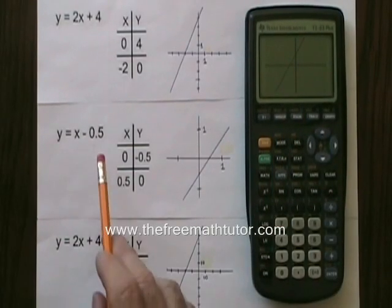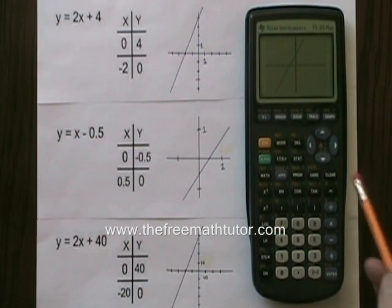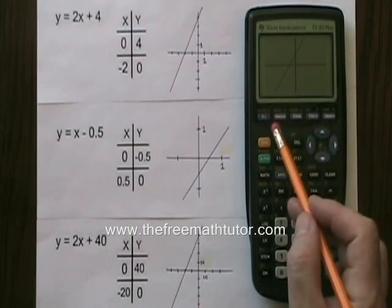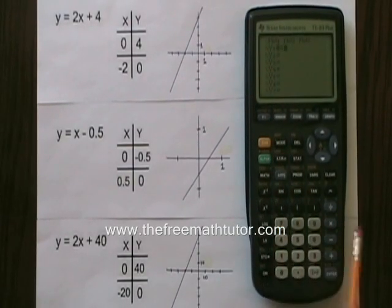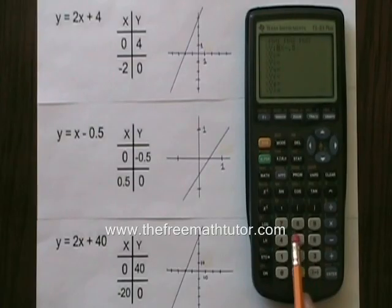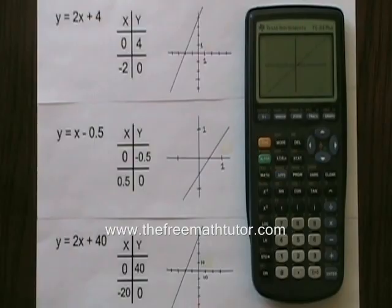Now let's try entering the second line, y equals x minus 0.5. I'm going to go into the y equals and I'm going to press clear to remove the first equation. Now I'm going to enter y equals x minus 0.5. The y equals is already there. So I press x minus 0.5 and I press graph. I can see my line.